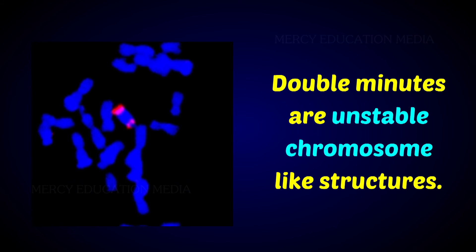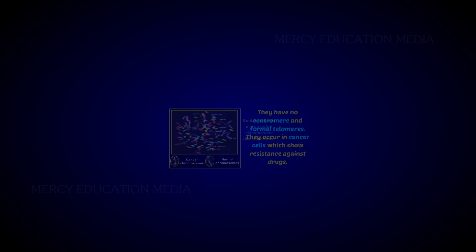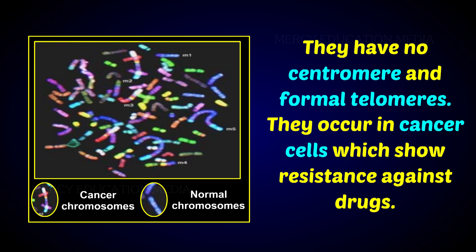The double-minutes are unstable chromosome-like structures. They have no centromere and no formal telomeres. They occur in cancer cells which show resistance against drugs.